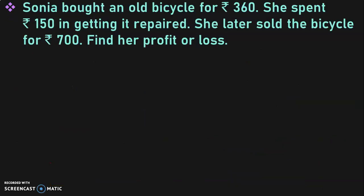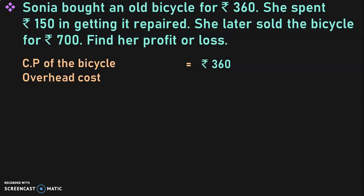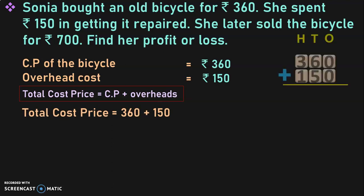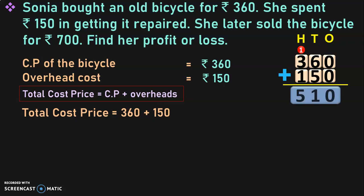Sonia bought an old bicycle for rupees 360. She spent rupees 150 in getting it repaired. She later sold the bicycle for rupees 700. Find her profit or loss. Cost price of the bicycle is rupees 360. Overhead cost is rupees 150. Total cost price equals cost price plus overheads: 360 plus 150. In the 1's place: 0; in the 10's place: 11, carry 1 to the 100's place; 1 plus 3 plus 1 gives 5. So the total cost price is rupees 510.